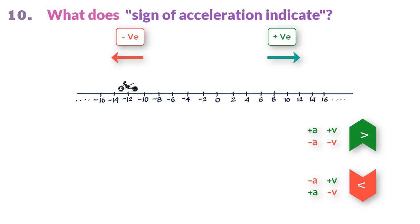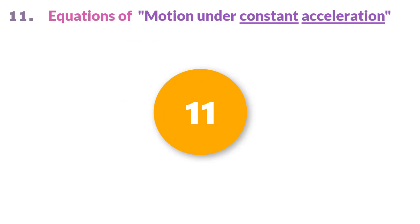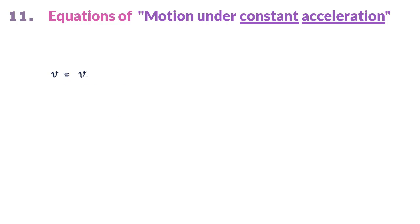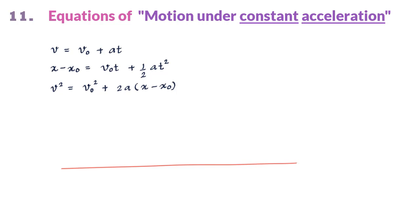The equations of motion under constant acceleration are three basic equations defining position, velocity and time for a particle. They are: (1) v equals v_0 plus aT; (2) x minus x_0 equals v_0 T plus ½aT²; (3) v² equals v_0² plus 2a(x minus x_0). Here v_0 is the initial velocity, x_0 is the initial position, a is the constant acceleration, and after time T, v is the final velocity and x is the final position.